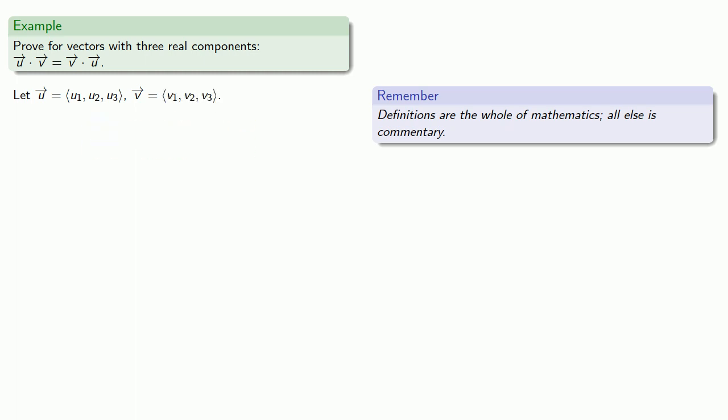Another useful idea in proof and in life and mathematics is that you can always write down one side of an equality. We want to prove that U·V is equal to V·U. We can write down one side U·V.